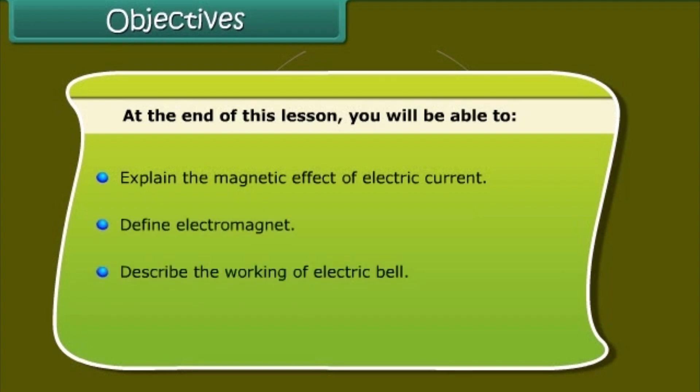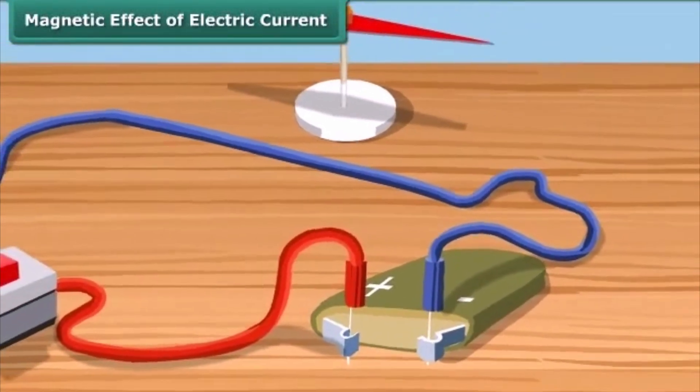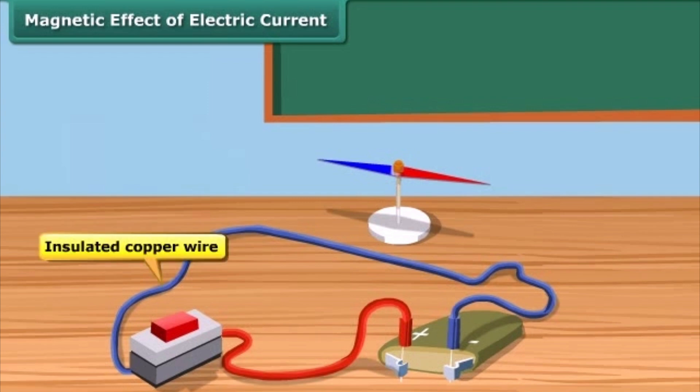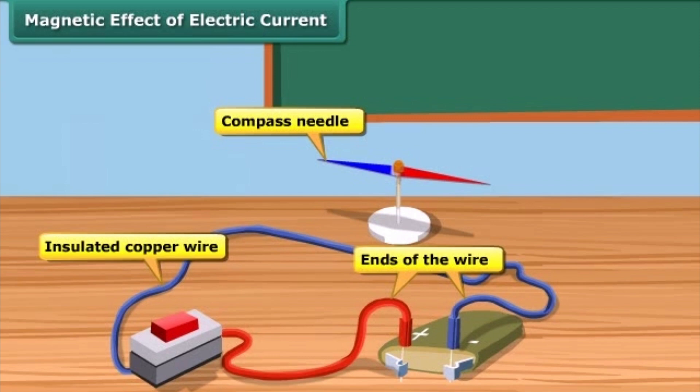Let us perform a simple experiment to understand it. Take a thin insulated copper wire and fix it in the north-south direction. Place a compass needle, which is a tiny magnet, under the wire. Connect the two ends of the wire to a battery.